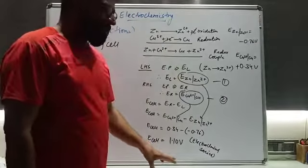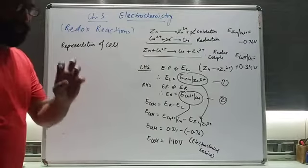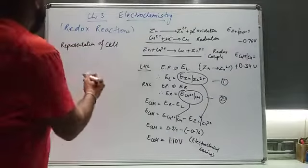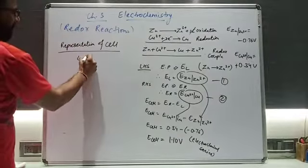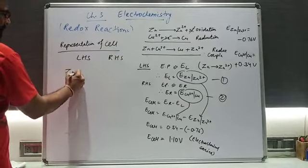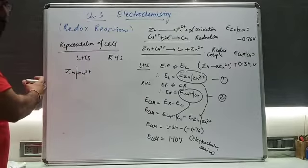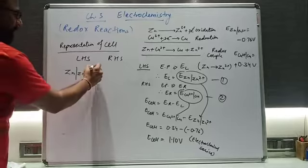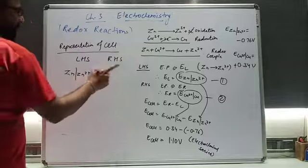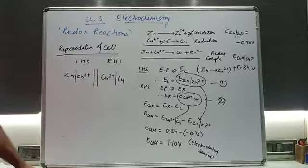So we discussed this part. The next thing is how will you represent this cell — there should be a short form to represent it. The representation of the cell: on the left-hand side, zinc is converted into Zn²⁺ — that reaction takes place on the left-hand side. Then we draw a double line representing the division of the cell (the salt bridge). On the right-hand side, Cu²⁺ is converted into Cu. So this is the representation of the cell.